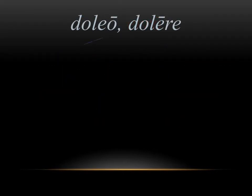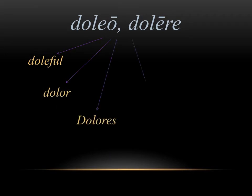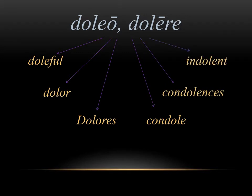Doleo dolere means to be sad in Latin, and in English we get the derivatives doleful, dolor, the name Dolores, condolences, and indolent. All six are holding on to this idea of being sad somehow. If you think of sending condolences to someone, that's usually something you do when that person is sad. And the name Dolores, believe it or not, comes from this idea of being sad. All six of these are coming from the same Latin root.